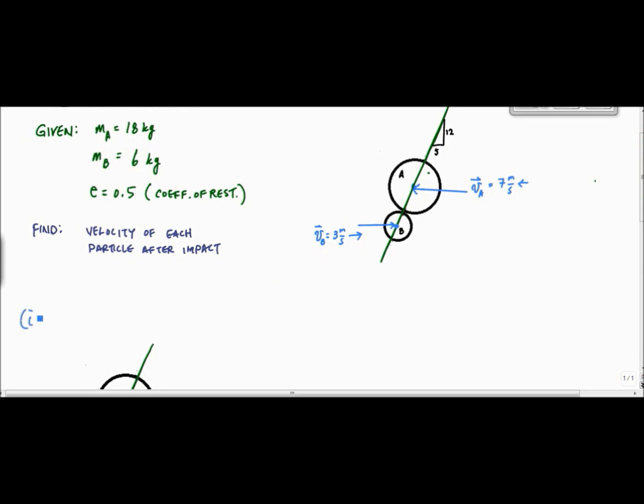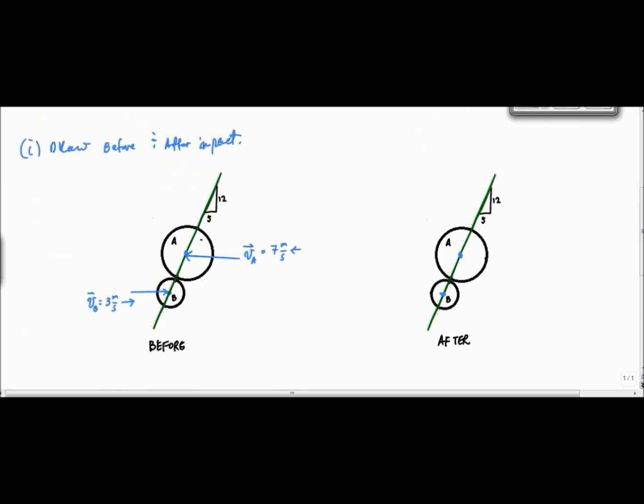Number one, draw before and after impact. You want to make two drawings. This is just a good habit to set your problem up. So here are the drawings before and after impact. Notice it's the same drawing except before impact I've got my velocities before and I've got velocities after that I've got to figure out what they are, or the speed after.